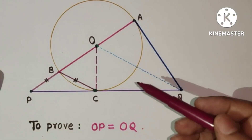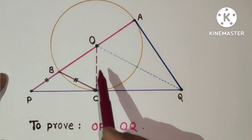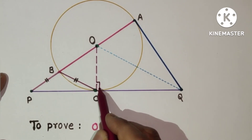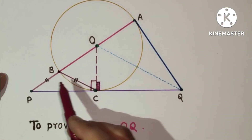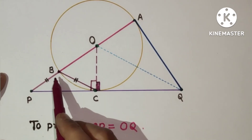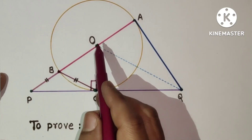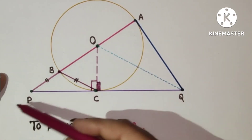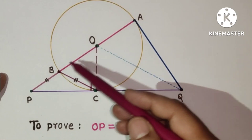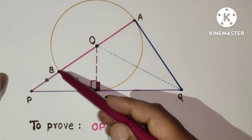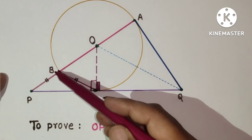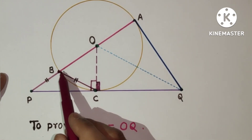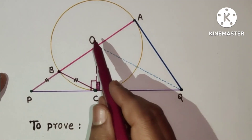If we join OC, radius OC and the tangent at the point of contact will be perpendicular, so this angle is 90°. Point B is equidistant from point P and point C, meaning BP equals BC. Triangle OCP is a right angle triangle, and OC is the hypotenuse, so B will be the midpoint of OP because B is equidistant from all three vertices of the right angle triangle. We can prove this by dropping a perpendicular from this point to OC.